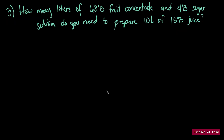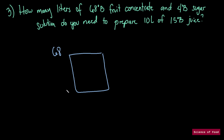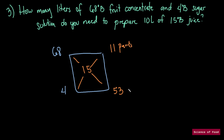For the last example: how many liters of 68 degree Brix fruit concentrate and 4 degree Brix sugar solution do you need to prepare 10 liters of 15 degree Brix juice? Let's start with a square. We write the concentration of our solutions — 68 on one side. This time we're not using water; we're using a 4 degree Brix sugar solution, so we write 4 there. In the middle we put 15, because our target is 15 degree Brix. Subtracting diagonally: 15 minus 4 is 11, and 68 minus 15 is 53. So we need 11 parts and 53 parts.